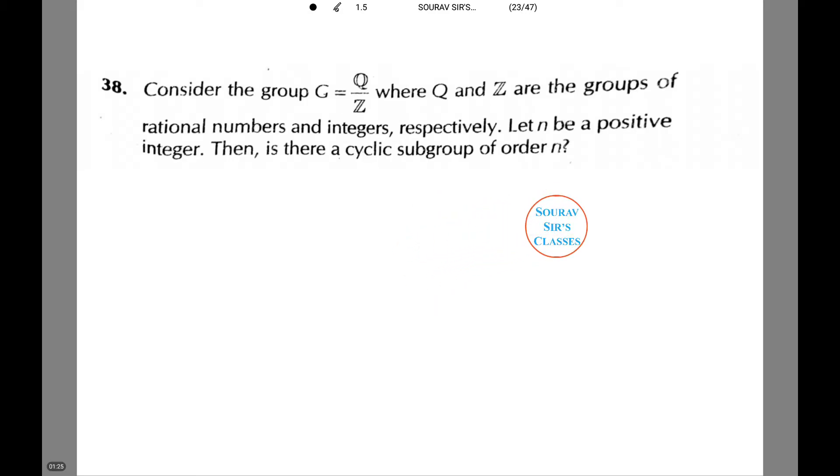Now, we need to consider the group G equals Q by Z, where Q and Z are the groups of rational numbers and integers respectively. Let n be a positive integer. Then, is there a cyclic subgroup of order n?